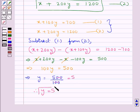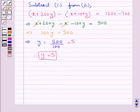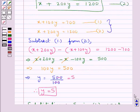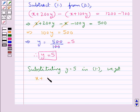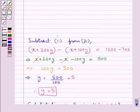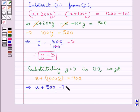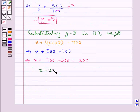Thus we get y equal to Rs. 5. Now we will get the value of x by substituting y equal to 5 in equation 1. This gives us x plus 100 into 5 is equal to Rs. 700, that is x plus Rs. 500 is equal to Rs. 700. From here, we get x is equal to Rs. 700 minus Rs. 500, that is equal to Rs. 200. So the value of x obtained is Rs. 200.